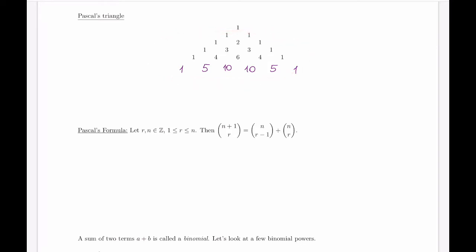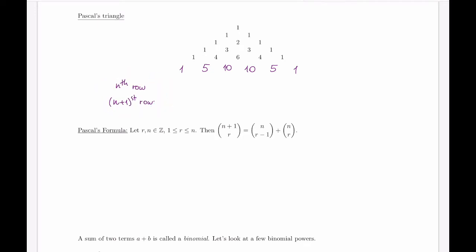So far it just seems like a cute little structure — what is the use of it? The use is thinking about what the nth row will look like, what the n plus first row looks like, and what these numbers generally represent. Is there any other way to interpret these numbers that appear in the triangle, as opposed to just following the pattern?